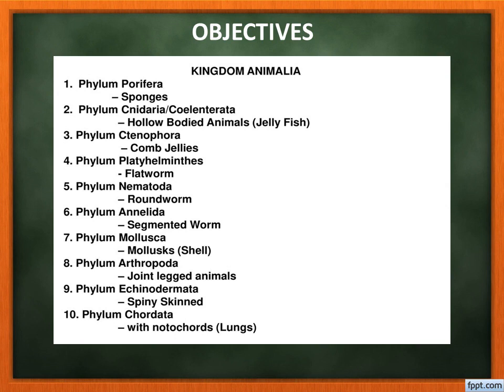Kingdom Animalia consists of ten phyla. The ten phyla are: Porifera, Coelenterata, Ctenophora, Platyhelminthes, Nematoda (Aschelminthes), Annelida, Mollusca, Arthropoda, Echinodermata, and Chordata. You must know these ten phylum names in order, because the forthcoming topics will discuss these phyla in detail.